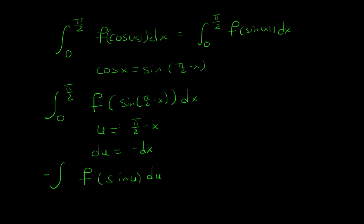And then when x is 0, I plug it in, I get π/2 for u. And when x is π/2, I get 0. So now I can rewrite this as, I can switch the limits here and multiply this by a negative. So that's going to cancel, and I'm left with the integral from 0 to π/2, f of sine u, du.